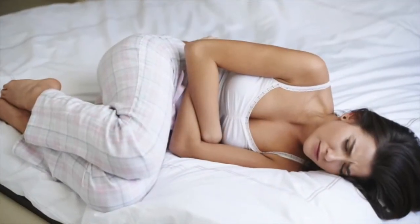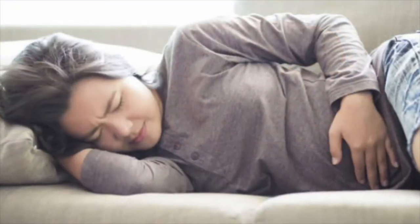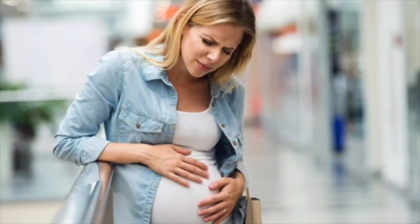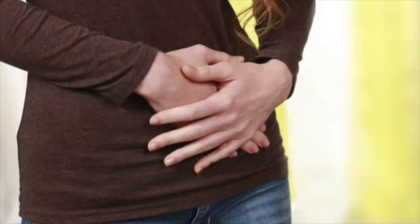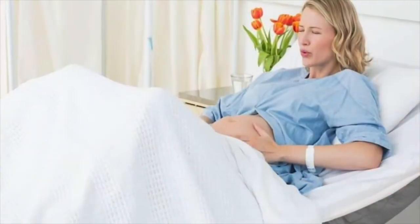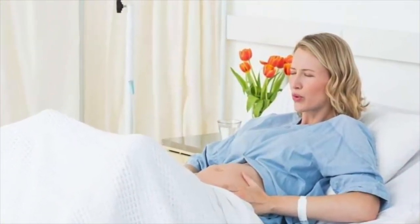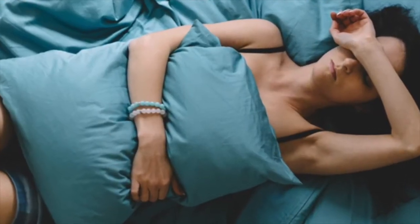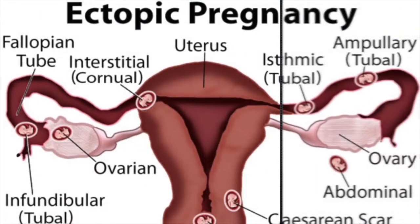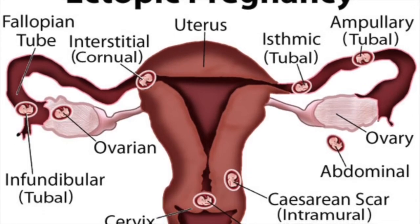Your doctor may also test your progesterone levels, because low levels could be a sign of an ectopic pregnancy. In addition, your physician may perform a culdocentesis, which is a procedure that involves inserting a needle into a space at the very top of the vagina, behind the uterus, and in front of the rectum. The presence of blood in this area may indicate bleeding from a ruptured fallopian tube.